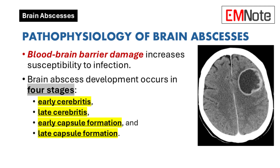The development of a brain abscess occurs in four stages. The first stage, early cerebritis, is characterized by the infiltration of neutrophils, plasma cells, and mononuclear cells around blood vessels. In the late cerebritis stage, macrophages and fibroblasts also infiltrate the area. The third stage, early capsule formation, involves the beginning of a fibrous capsule around the abscess. The final stage, late capsule formation, sees the capsule becoming thicker and more defined.